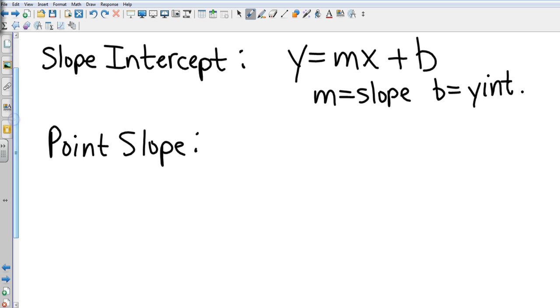Then we have point-slope form, which is y minus y1 equals m times (x minus x1), where x1 and y1 are coordinates and m is still the slope.